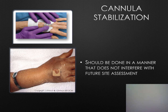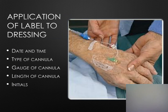If a catheter migrates outside of the vein, never re-advance it. Stabilize it where it is and reassess to confirm proper placement. If sutures were used to secure a device and become loose or non-intact, remove them. Apply a dressing with a label containing all required information, including the initials of the nurse who initiated the site.